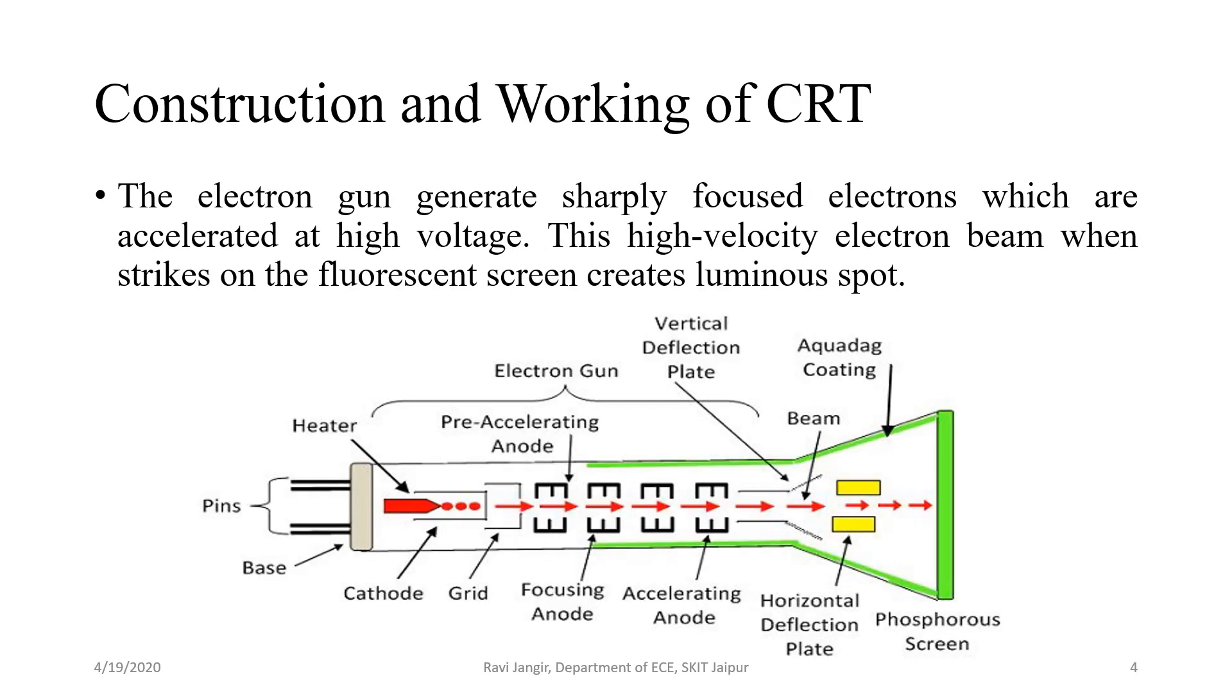Figure shows different parts of CRT that is electron gun assembly, deflection plate assembly, fluorescent screen, glass envelope and base. Here base is used to provide electrical connections through pins to different parts of CRT.